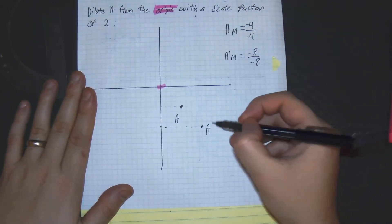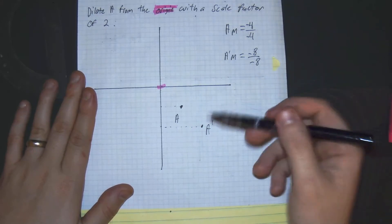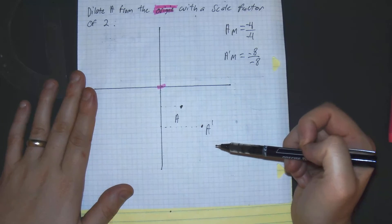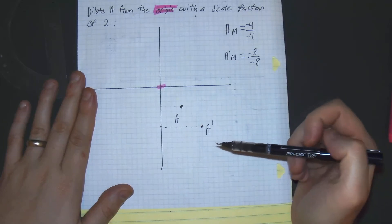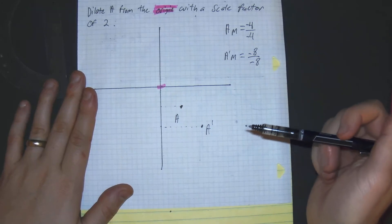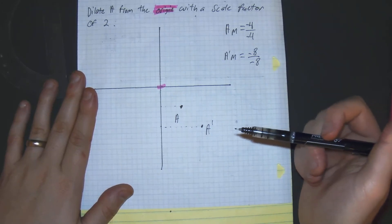And our new image being dilated from the origin would be at this point, which would be 8, negative 8. That's our new dilation based off the slope.